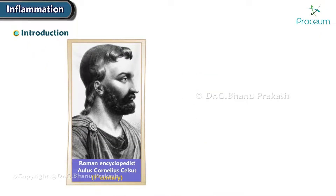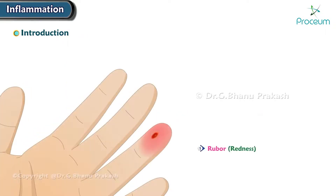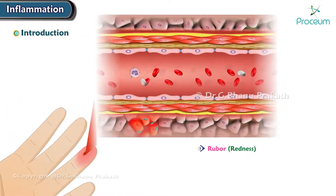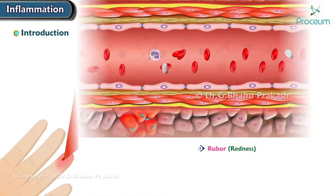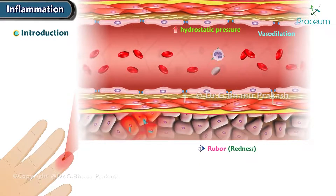In the 1st century AD, the Roman encyclopedist Aulus Cornelius Celsus described the four cardinal signs of inflammation. The first was ruber, or redness. This is due to the dilation of blood vessels.